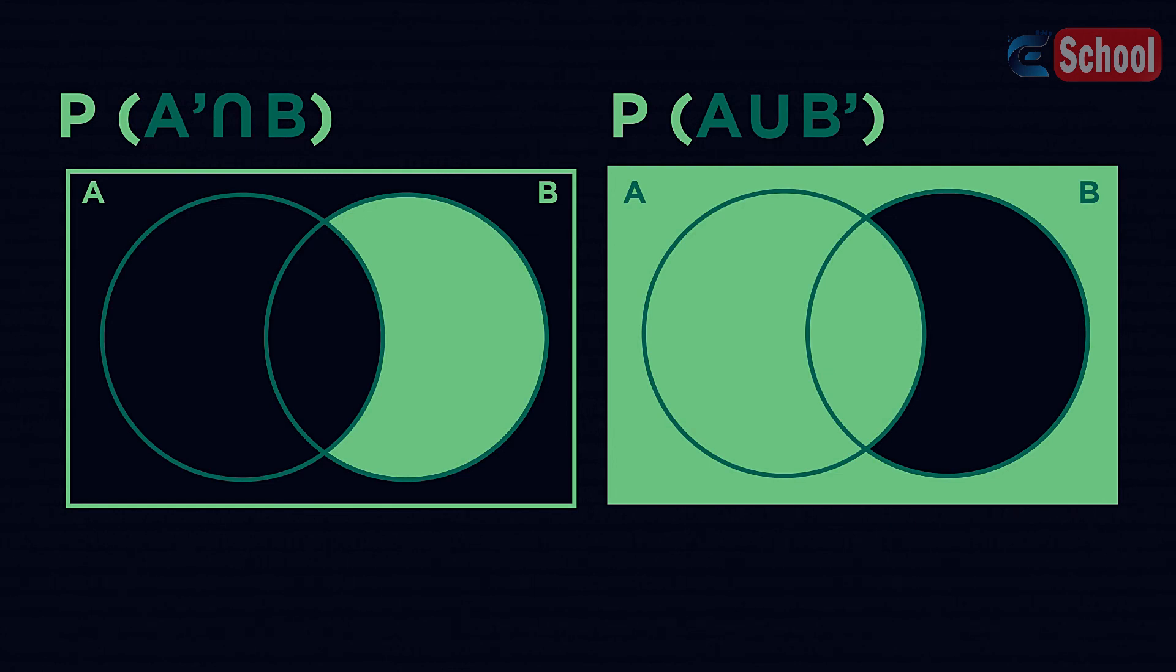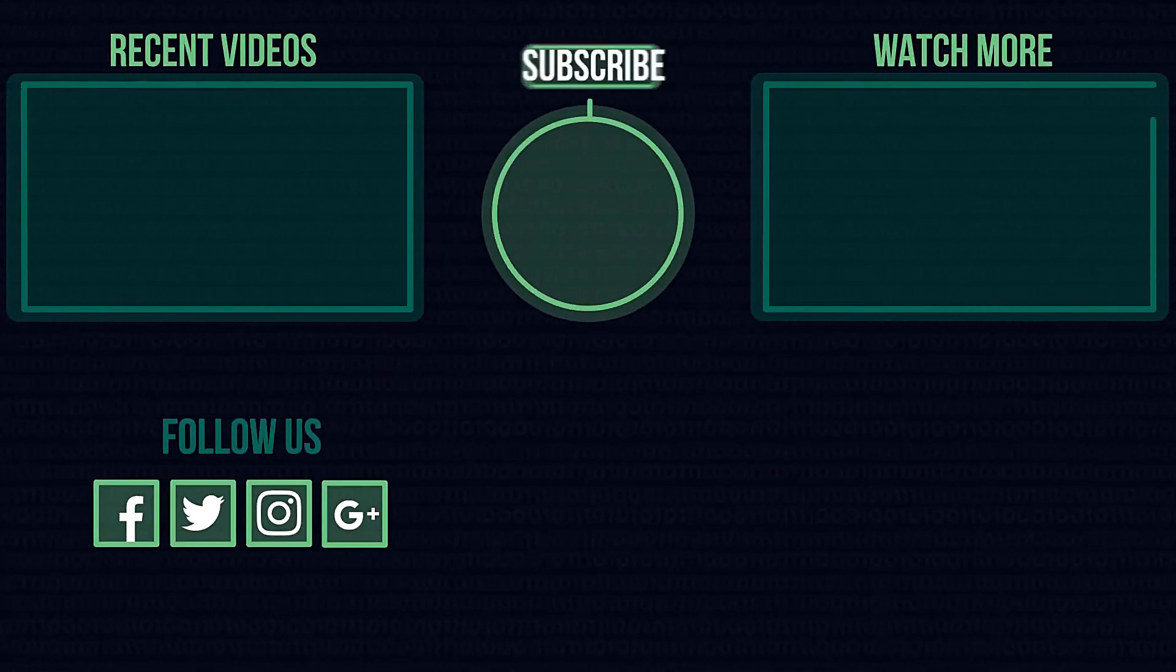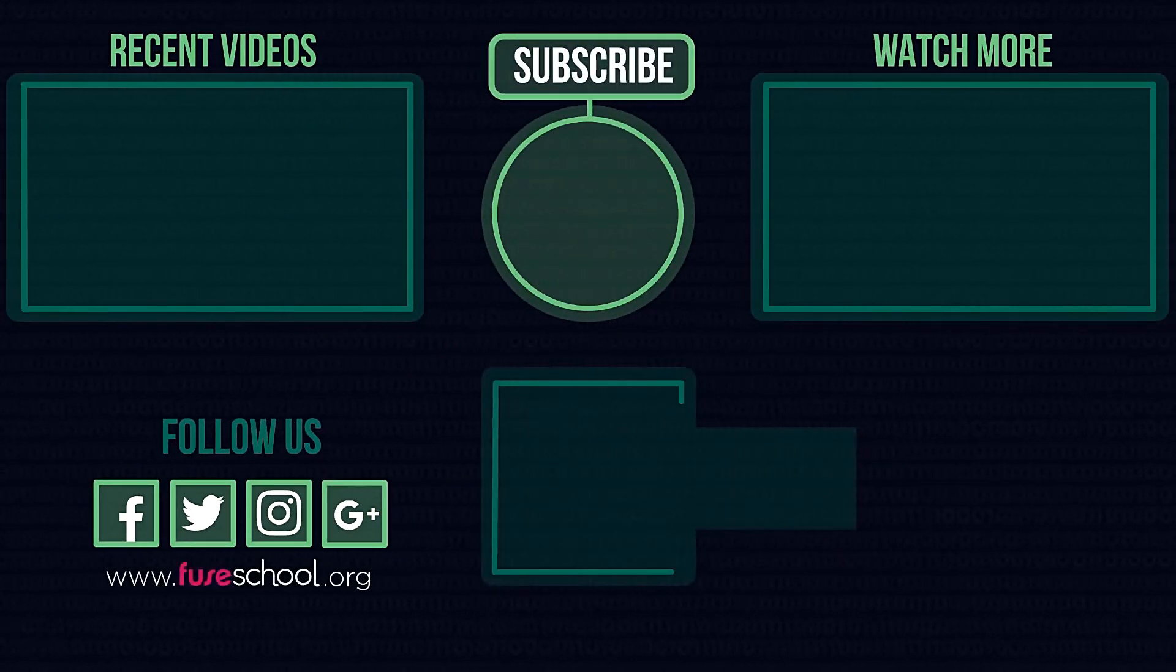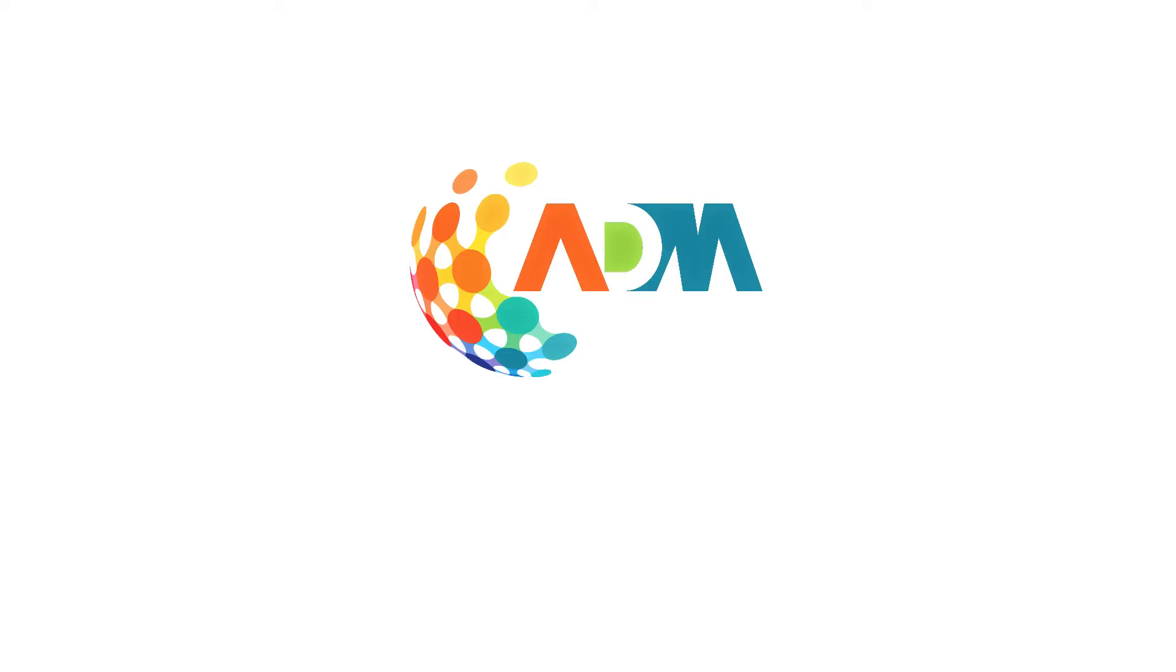So there you have a quick guide to set notation. Applying union and intersection to Venn diagrams can be tricky, so taking them step by step is always advisable. If you liked the video, give it a thumbs up. And don't forget to subscribe. Comment below if you have any questions. Why not check out our ViewSchool app as well? Until next time.